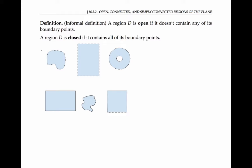In the figures below, the first region, I'll call it A, is open — it doesn't contain any of its boundary points. That dotted line means that the edge or boundary is not included in the set. The second region B is also open; it doesn't include any of its boundary points along its edge either. And region C is also open.